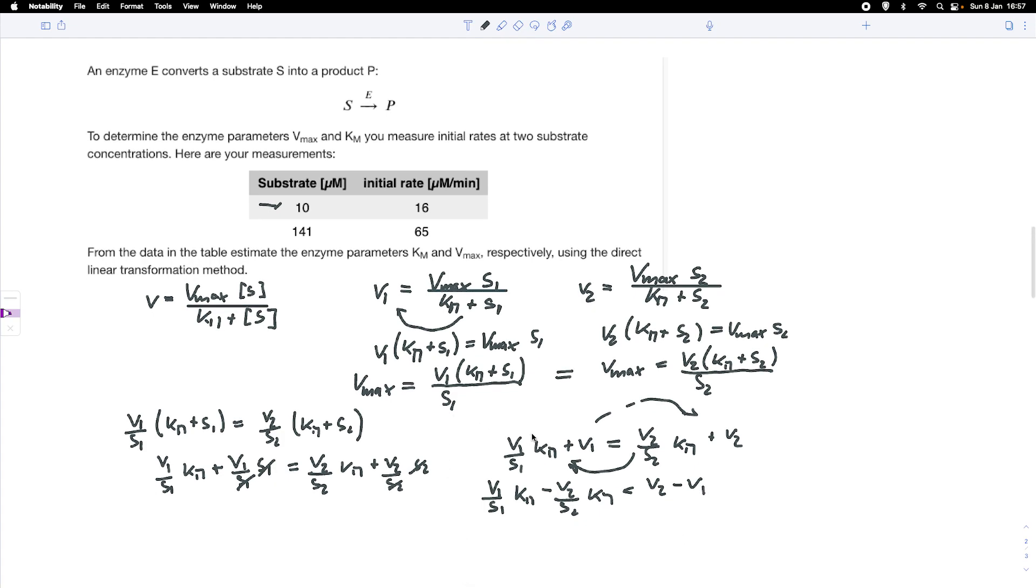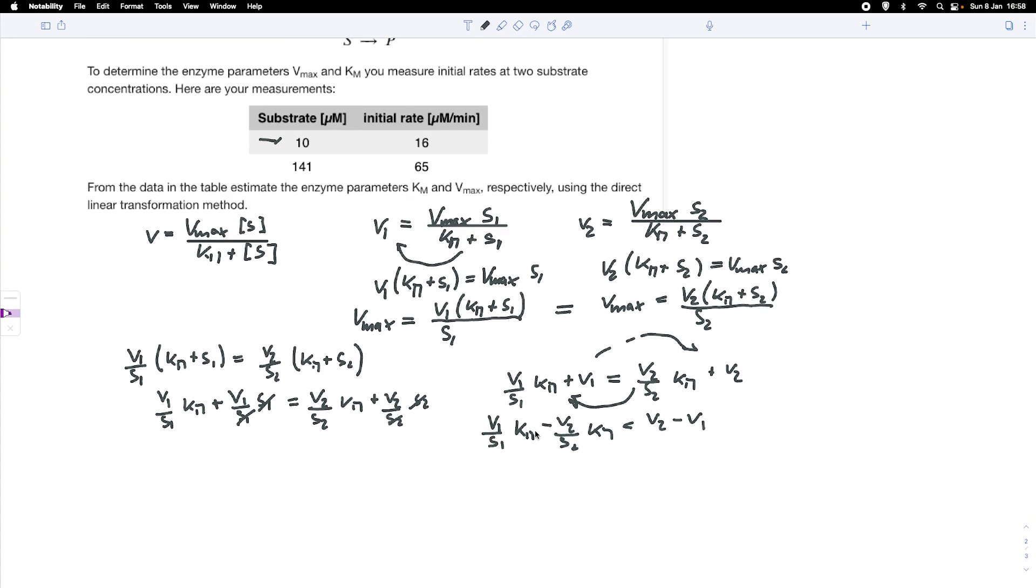We factor out Km and get Km times (V1 over S1 minus V2 over S2) equals V2 minus V1. We can bring that to the other side, so Km equals (V2 minus V1) divided by (V1 over S1 minus V2 over S2). That's a nice equation.